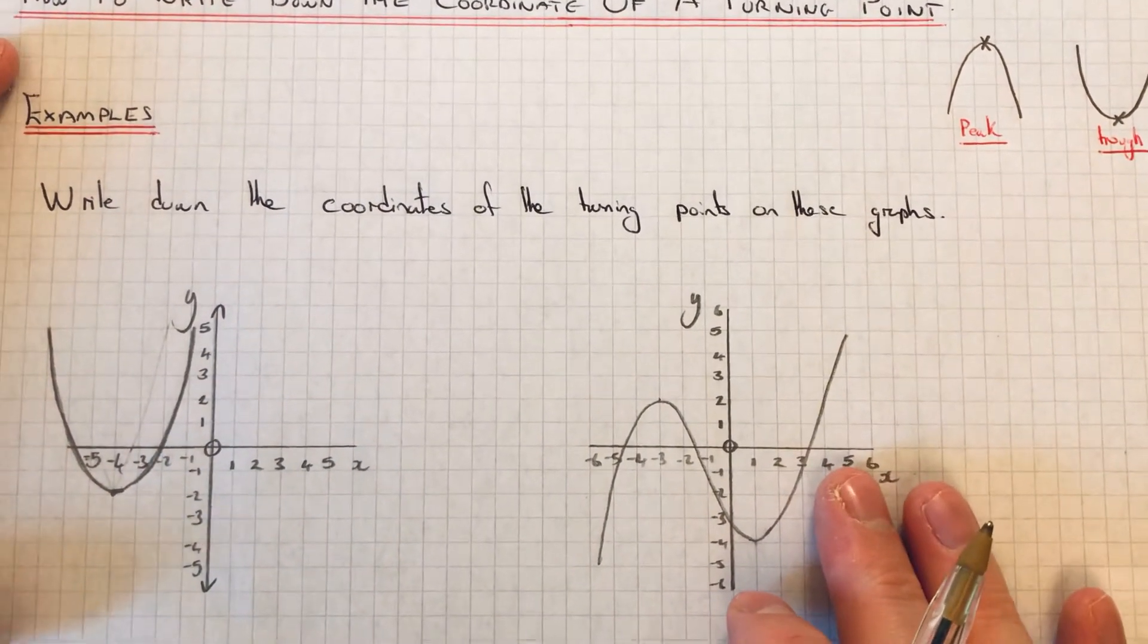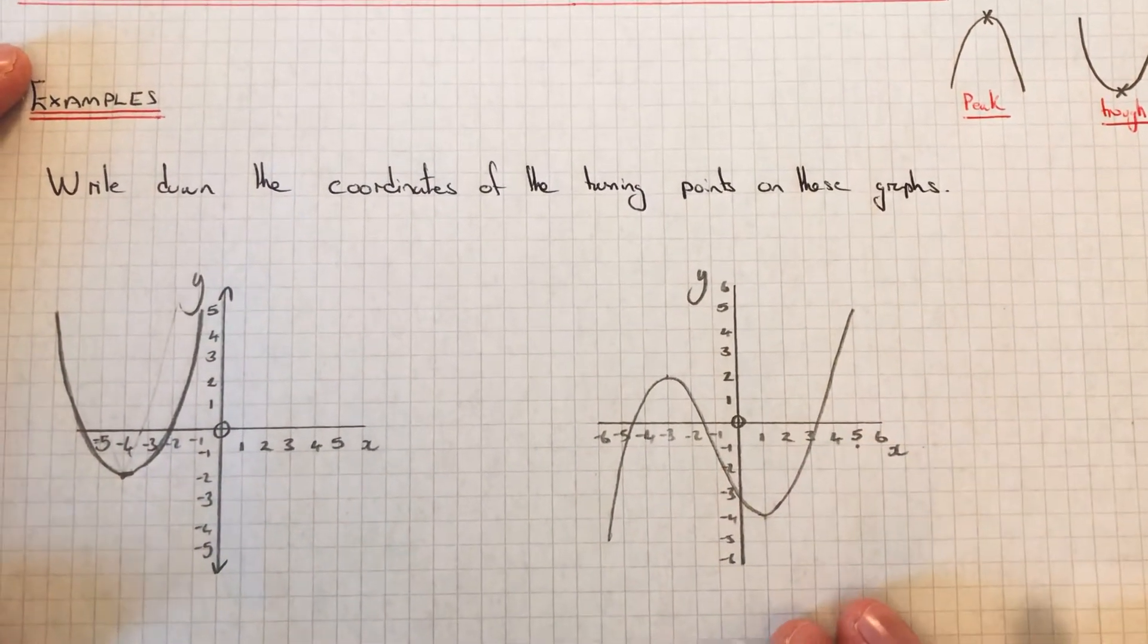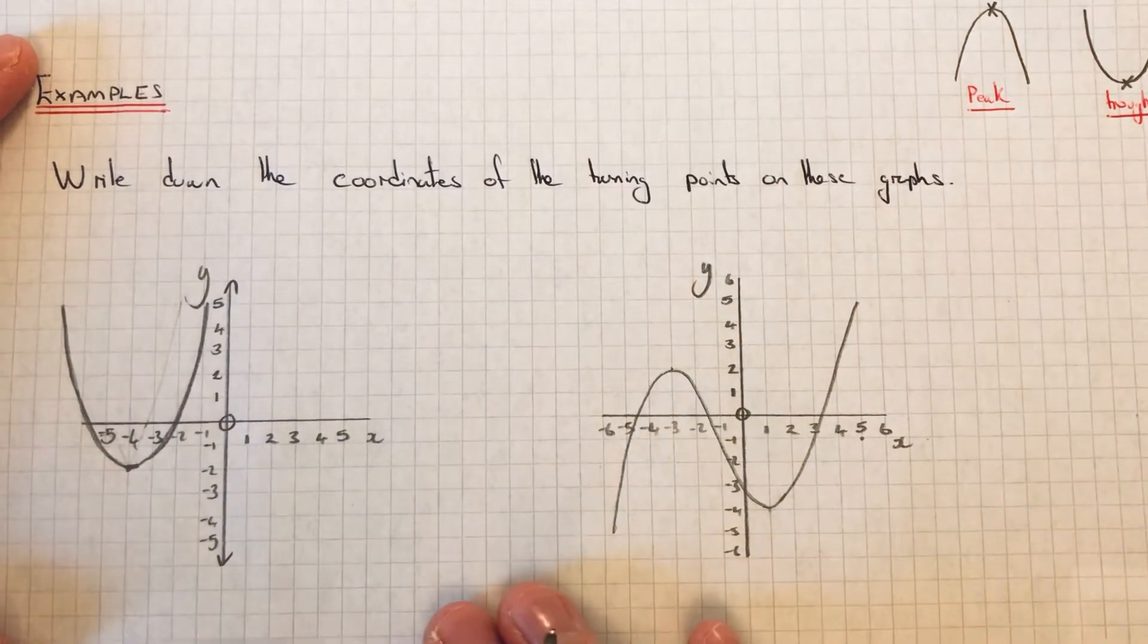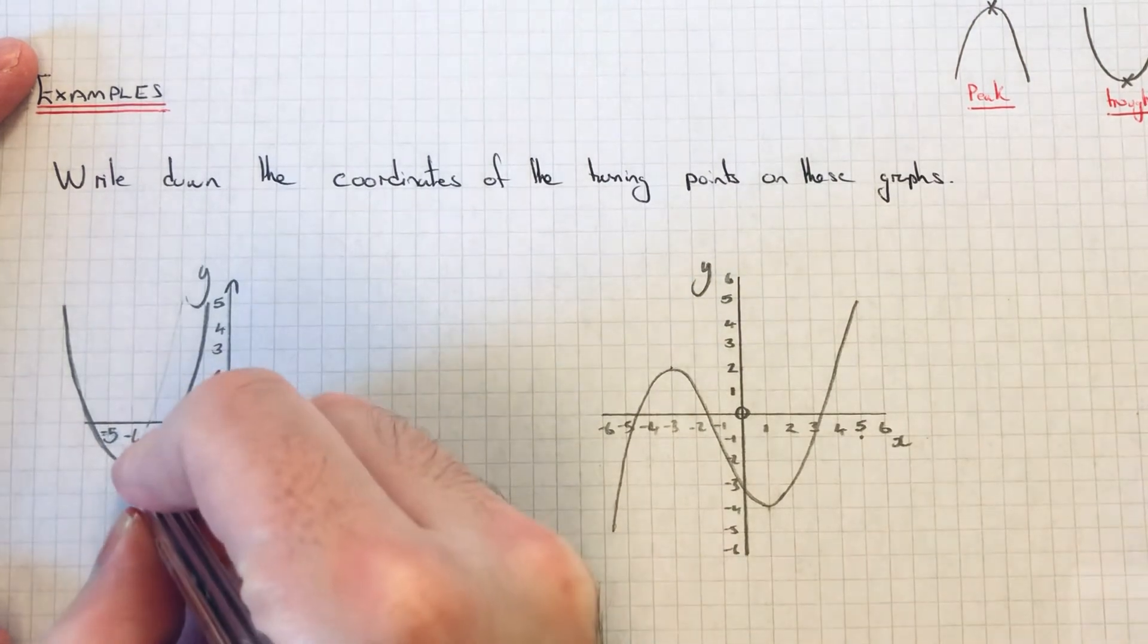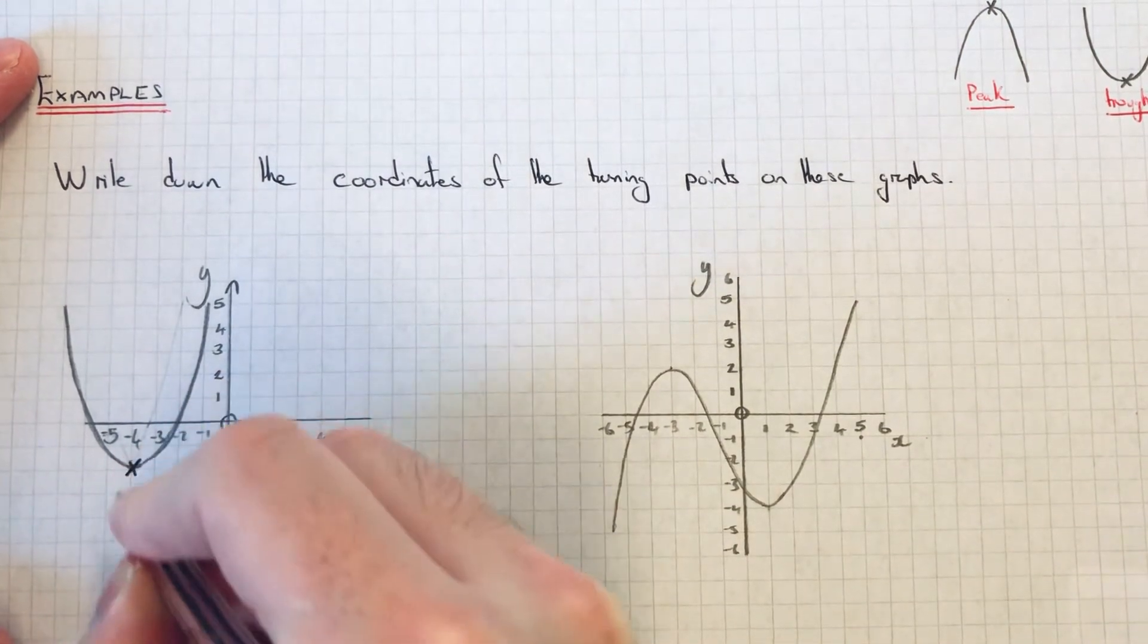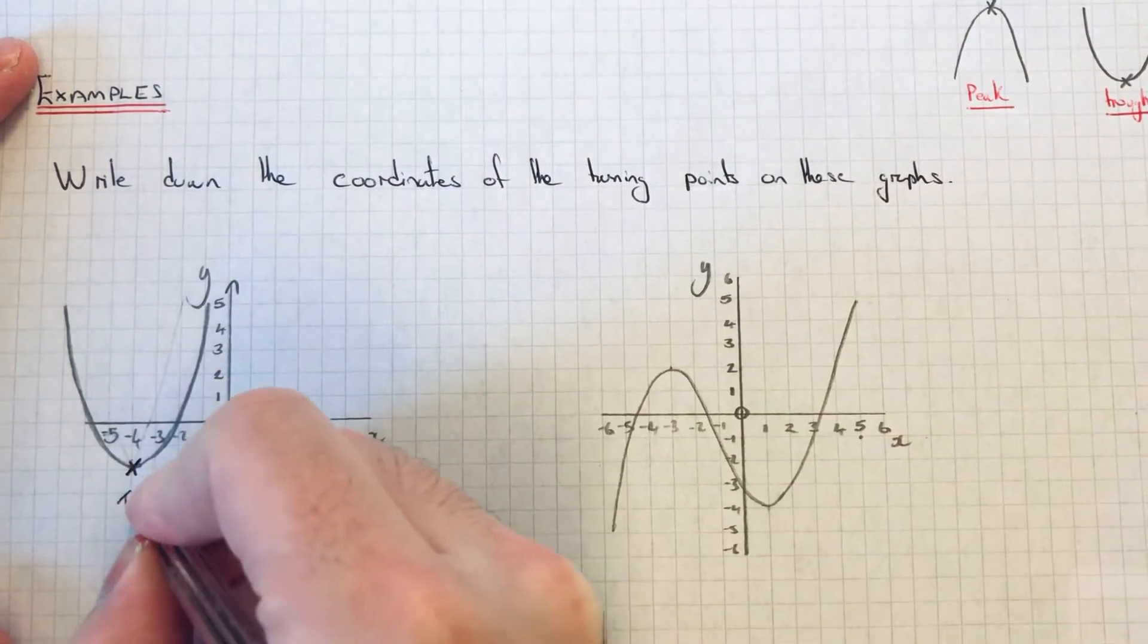So let's have a look at the two examples here. So we've got to write down the coordinates of the turning points. Okay, so on this one we have a trough which is here, so this is our turning point.